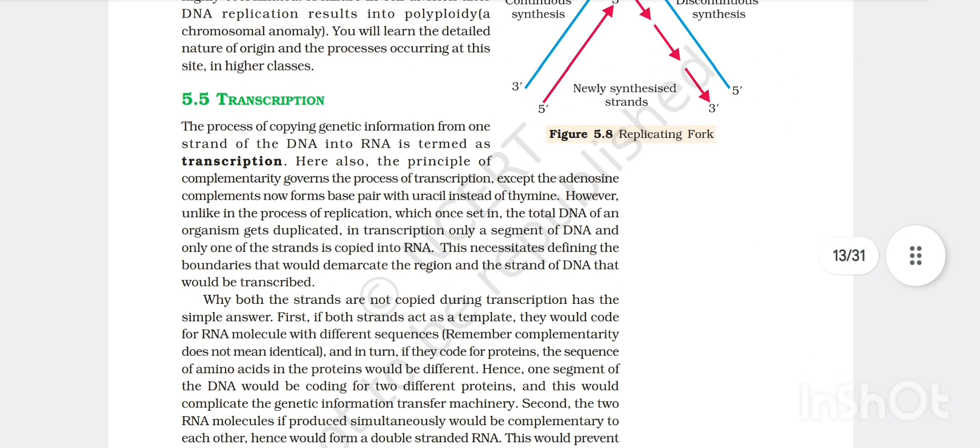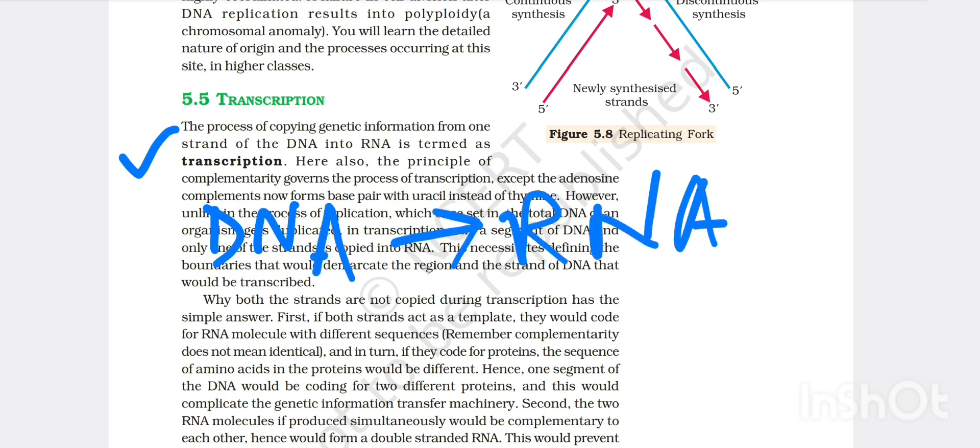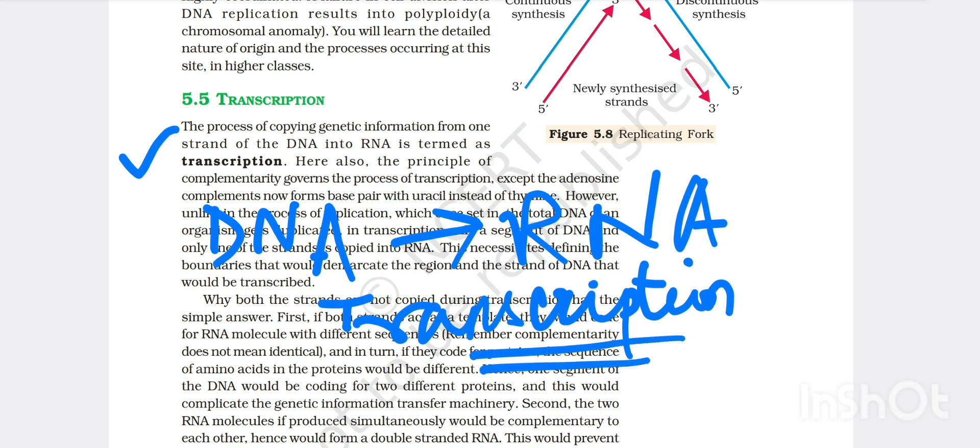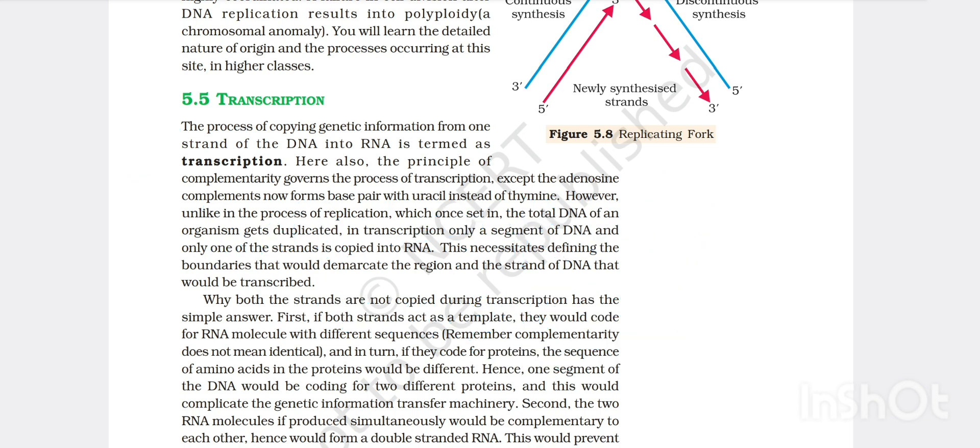Then transcription. The process of copying of genetic information from one strand of DNA to RNA is termed as transcription. It is the first step of your protein synthesis where the mRNA strand or messenger RNA strand is formed from the DNA. Here also the principle of complementarity governs the process of transcription except adenosine now forms base pair with uracil instead of thymine. Generally adenine pairs with thymine but when DNA forms a new mRNA, the adenine forms uracil against it instead of thymine because mRNA lacks thymine.